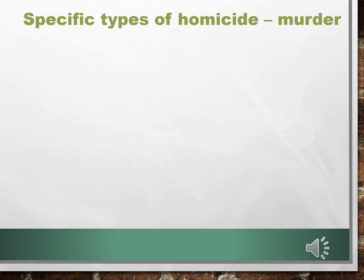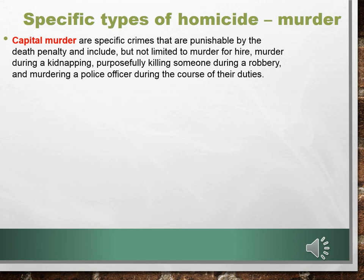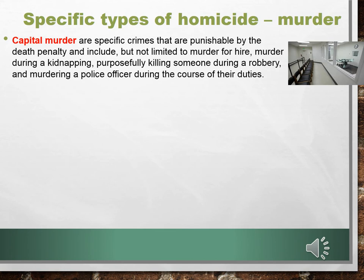Now that you know that murder and manslaughter are the only types of criminal homicides, let's look at these two crimes in detail. There are three types of murder. Capital murder are specific crimes punishable by the death penalty, including but not limited to murder for hire, murder during a kidnapping, purposefully killing someone during a robbery, and murdering a police officer during the course of their duties. These are crimes considered so bad by society that the only punishment is execution. These are specific intent crimes — the specific intent of the offender must be seen directly in the words of the criminal statute — and not all states or countries have capital murder statutes.